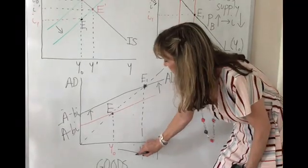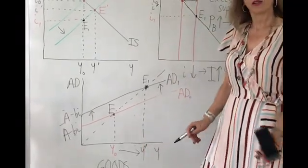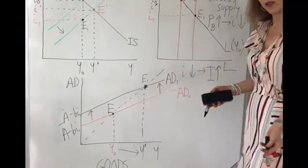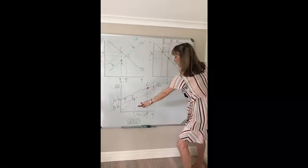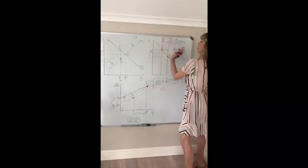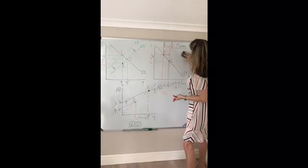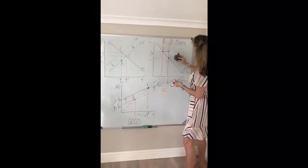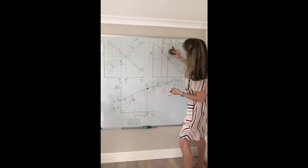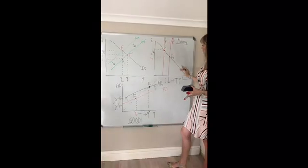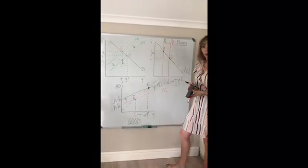So what has happened in the process? Income has risen and there's just one final step in this process, that an increase in income in turn has a knock-on effect back in the money market. So what do we know? What have we learned about an increase in income? We hold income constant along a given money demand curve.